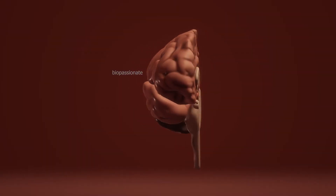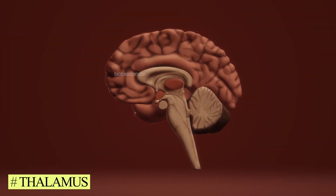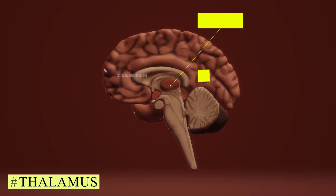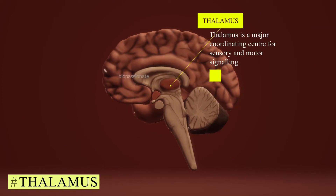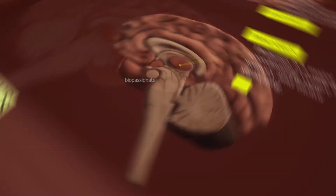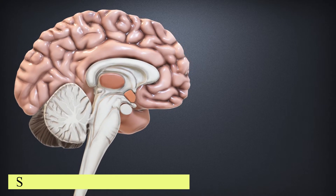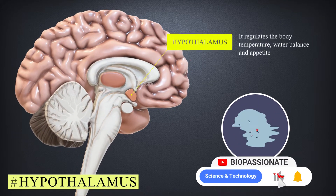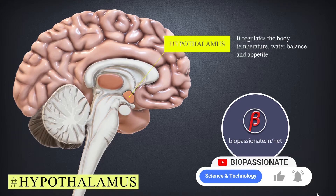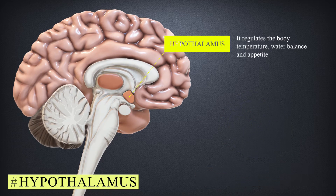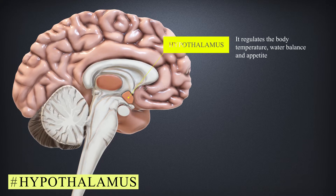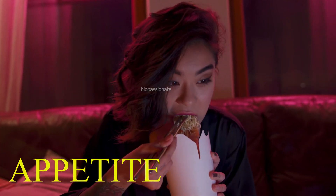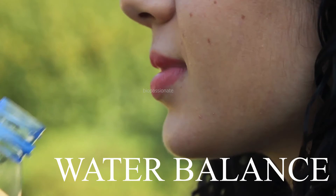The cerebrum wraps around the structure called the thalamus. The thalamus is a major coordinating center for sensory and motor signaling. The hypothalamus lies at the base of the thalamus and regulates body temperature, the urge for eating, and water balance.